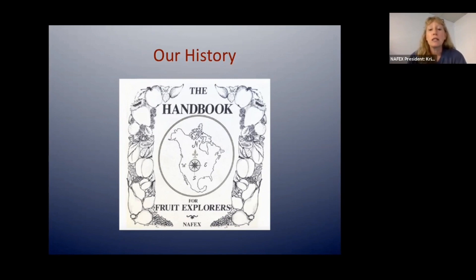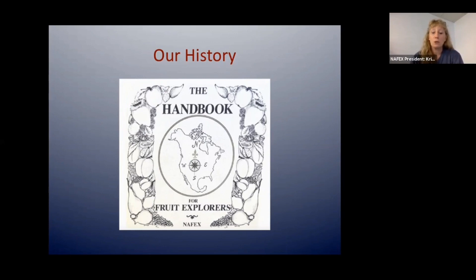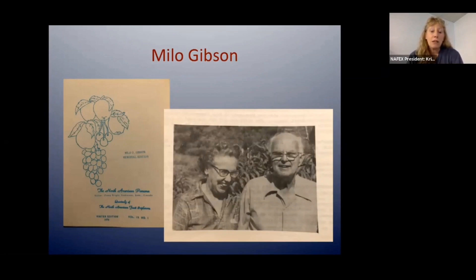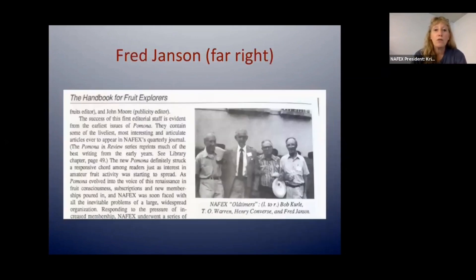The two founders, when they came together, weren't really keen on starting an organization, but they felt there was a need for it. They got some seed money — much of it their own — and formally created the nonprofit, the North American Fruit Explorers. Of the two founders, Milo Gibson was the first. He was from Canada, reflecting that NAFEX was a group of both U.S. and Canadian growers. Milo came together with Fred Jansen, and the two of them started the North American Fruit Explorers.